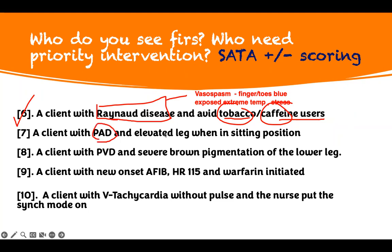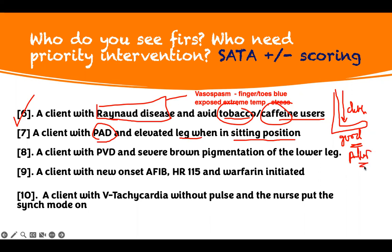A client with peripheral artery disease (PAD) is elevating their leg when in a sitting position. Peripheral artery disease — the problem is decreased blood flow to the leg. Whenever their leg is in the dependent position, it's good. If you elevate their leg, there is a color change. We call it dependent rubor and elevation pallor. This client is elevating their leg when sitting — they did not receive the teaching appropriately. Therefore, you need to see this patient.